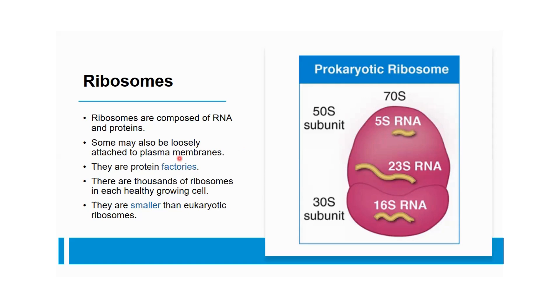They are protein factories. There are thousands of ribosomes in each healthy growing cell. They are smaller than eukaryotic ribosomes. These ribosomes are meant for protein synthesis.